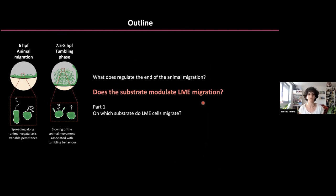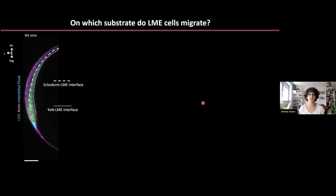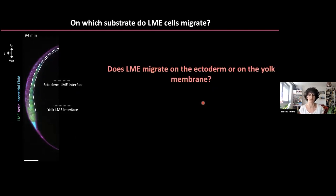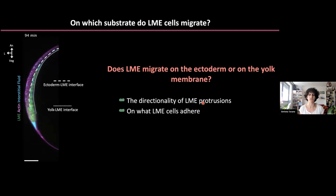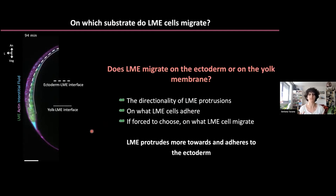My talk is divided into two parts. In the first part, I will talk about the substrate that cells use, and then whether it modulates lateral mesendoderm migration. In the absence of ECM, the cells are in contact with the ectoderm and the yolk membrane — both possible substrates. To determine whether they prefer one over the other, I used three different analyses: checking the directionality of protrusions, to which surface they adhere during migration, and if forced to choose, which one they would prefer. Due to time, I cannot show the first two analyses, but they both show that lateral mesendoderm cells protrude more towards and adhere to the ectoderm.